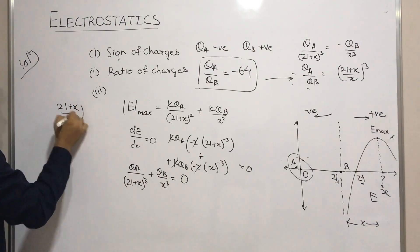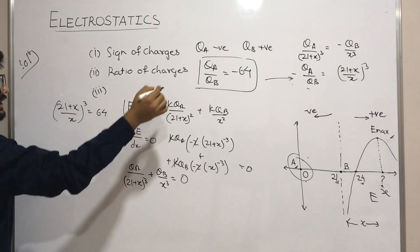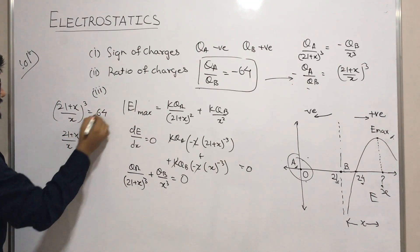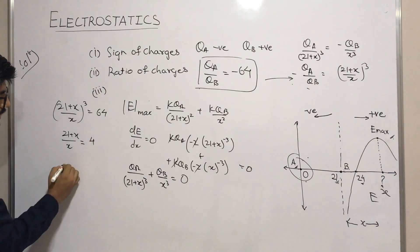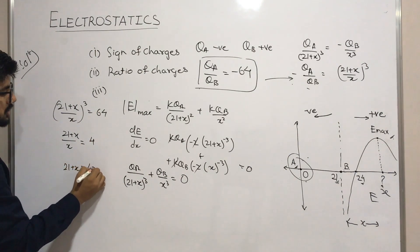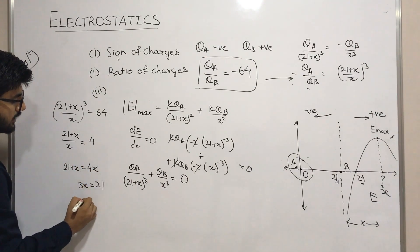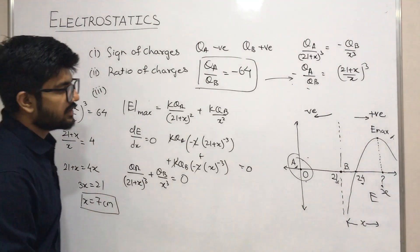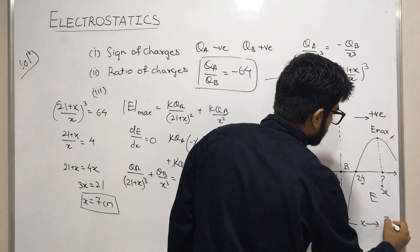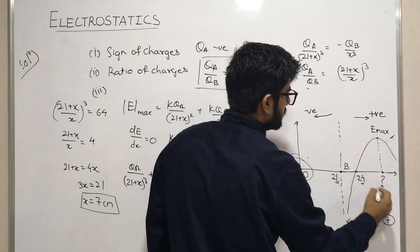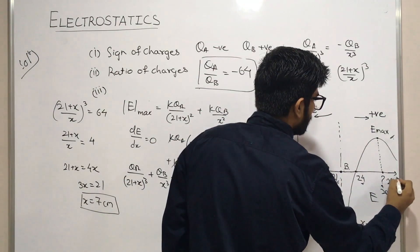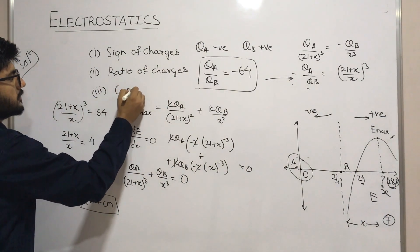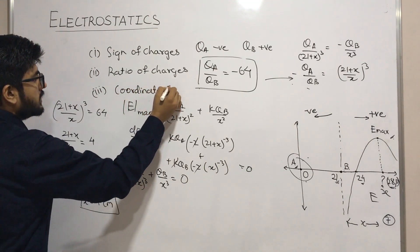Since qa/qb = −64, we have (21+x)/x whole cubed equals 64. Taking the cube root: (21+x)/x equals 4. Solving: x equals 7 cm. So the distance from qb is 7 cm. Adding to the coordinate: 24 plus 7 gives 28 — wait, the coordinate is 21 plus 7 = 28. So the third question answer is coordinate (28, 0).